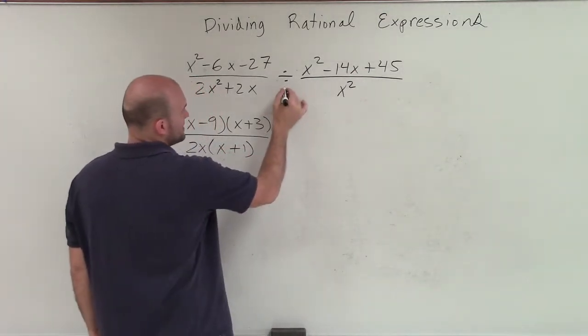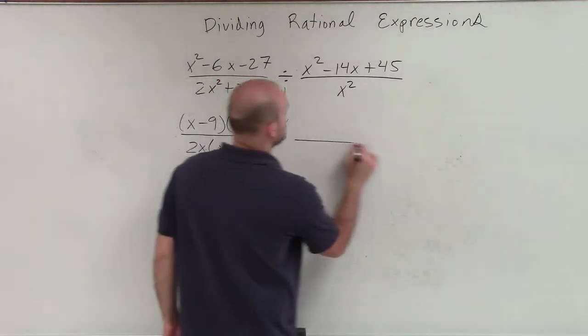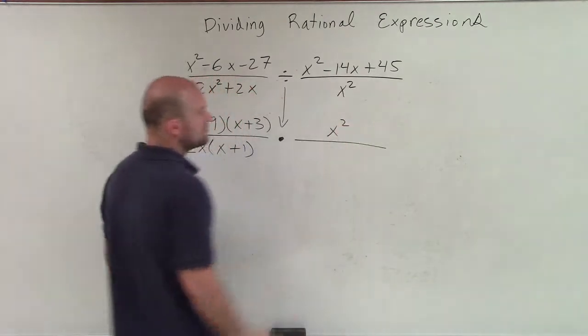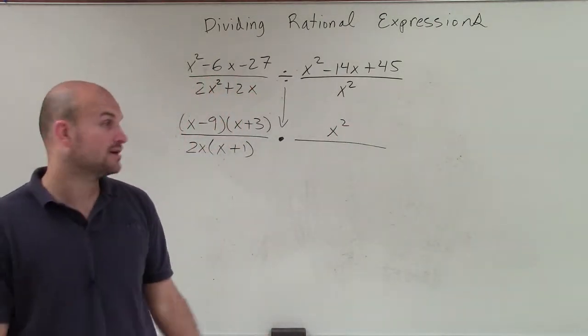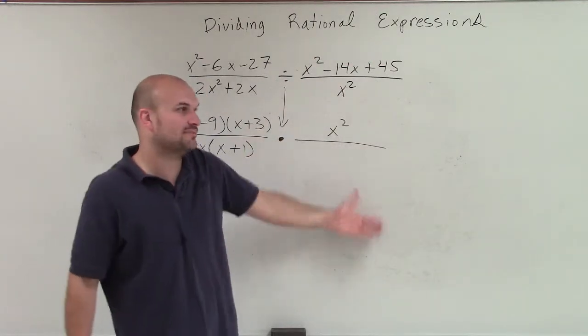Now I'm going to change this from a division problem to a multiplication problem. But to do that, I need to multiply by the reciprocal of my divisor. So now I'm going to take my x squared on the numerator. And then rather than writing my trinomials on the denominator, I'm going to factor it to its simplified form first.